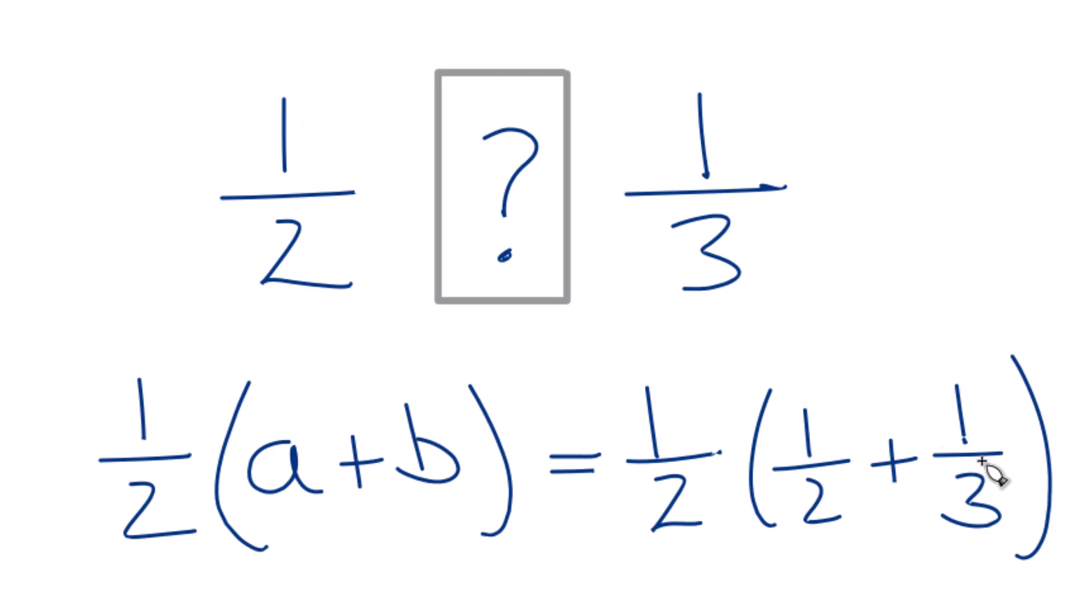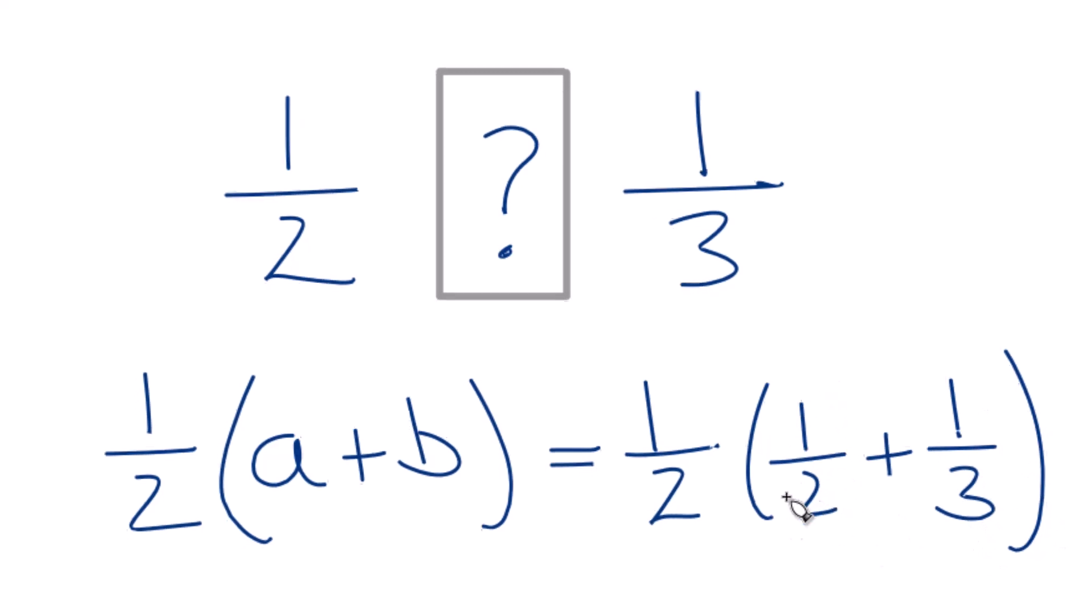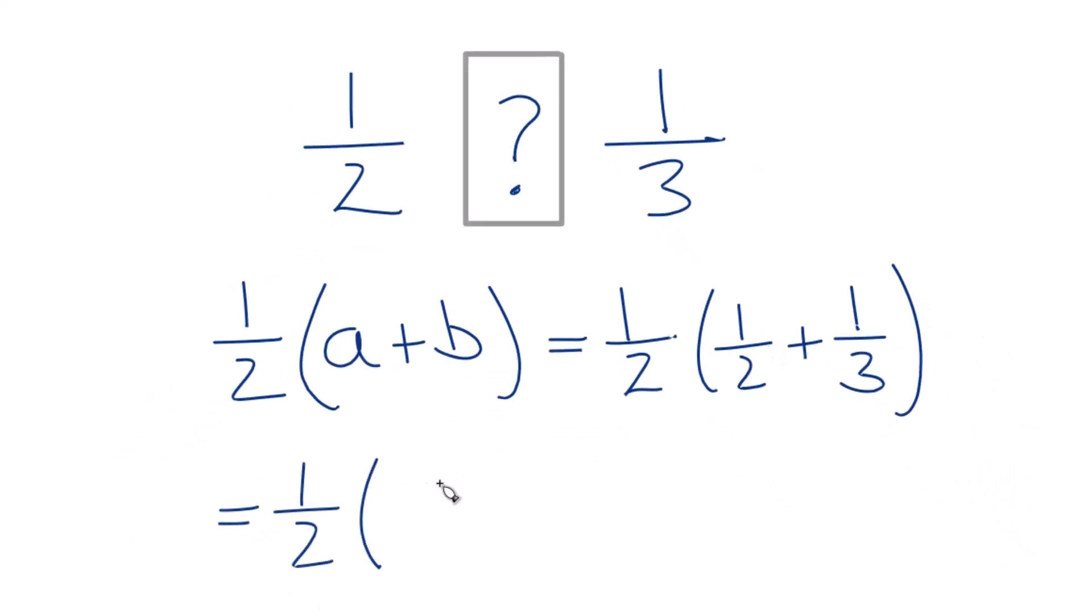So I think what I'll do is I'll multiply 1 half times 3 over 3. That'll give me 3 sixths. That's the same as 1 half, but now I have a 6 down here. And here I could multiply 1 third by 2 over 2 because that would give me 2 sixths, which is the same as 1 third.